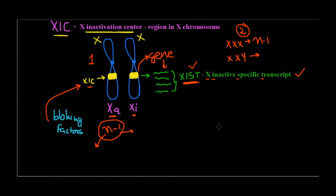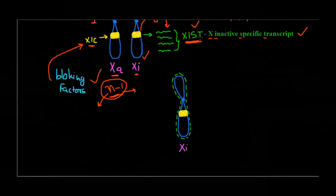To summarize: the X chromosome contains the XIC region — the X Inactivation Center — which has a gene that codes for XIST, needed for inactivation of the X chromosome. XIST is produced by the X chromosome that has to undergo inactivation; the other chromosome is kept active by blocking factors that prevent XIC expression. One important thing to remember: XIST is RNA — a transcript — it never undergoes translation. Only the RNA form is produced. This XIST RNA then coats the chromosome that is undergoing inactivation.